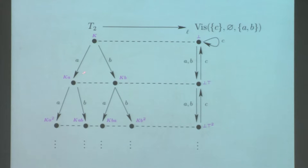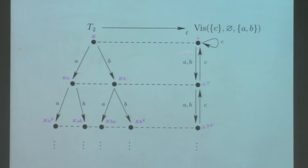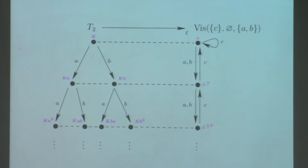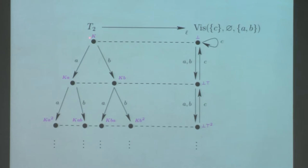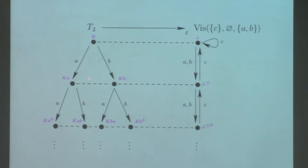Here we have the infinite binary tree encoded as usual, and here we have this automaton. Just observe that when you go down here, the length is increased by one. The infinite binary tree is length-reducible to this vis automaton — all the vertices of a given level of the infinite binary tree have the same length and are mapped to the corresponding vis automaton.